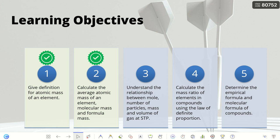These are the learning objectives for chapter 1. We have learned about objectives 1 and 2. Objective number 3 is for you to understand the relationship between moles. We're going to learn the definition of mole first, which is related to the number of particles. From the number of particles and the mass, we'll see the relationship between mass and mole, leading to the topic of molar mass. The number of moles of a substance is also related to the volume of that substance in the gaseous state at a specific temperature and pressure condition. In this set of slides, we're going to learn about mole and number of particles.